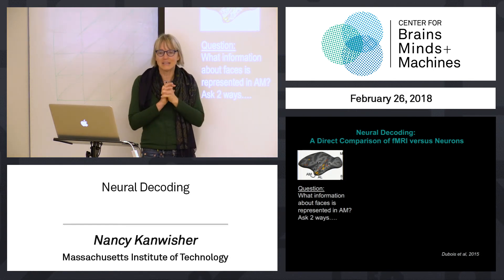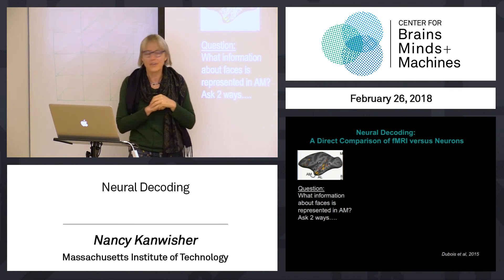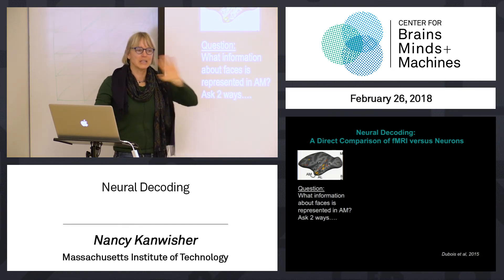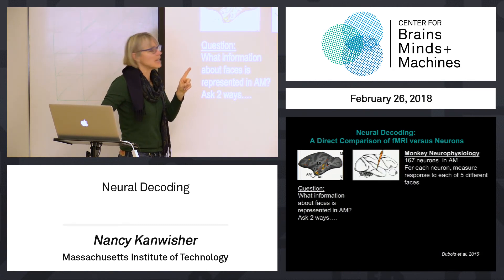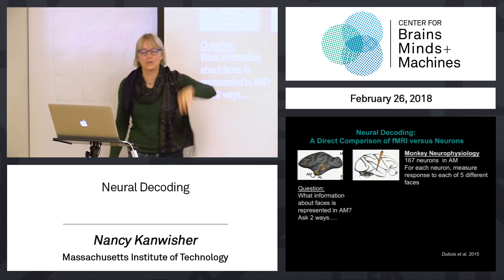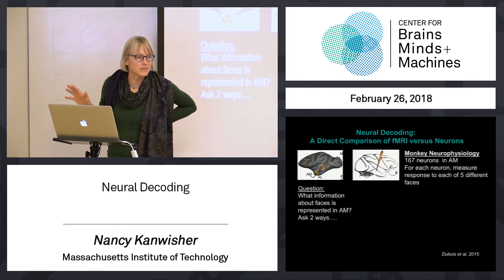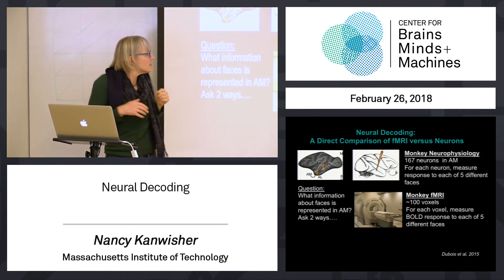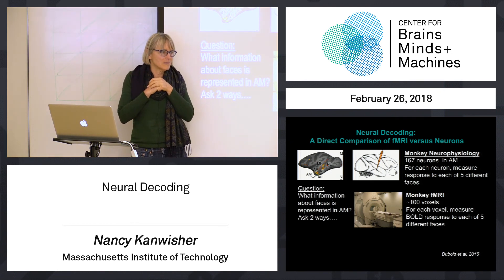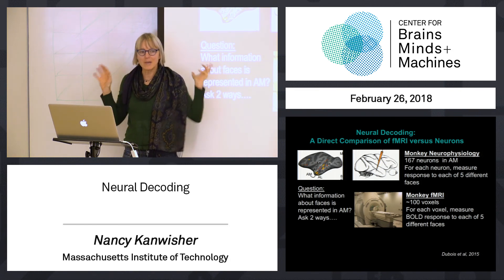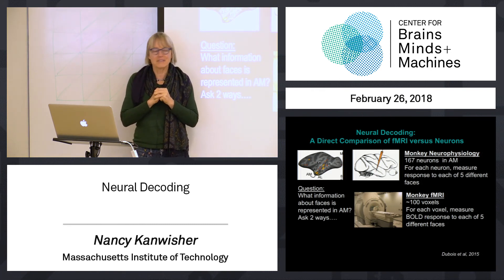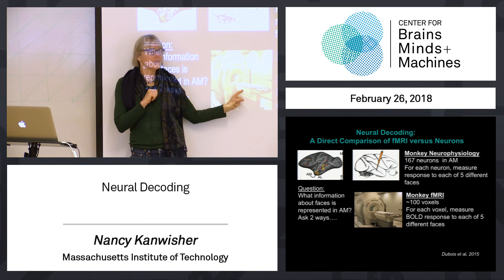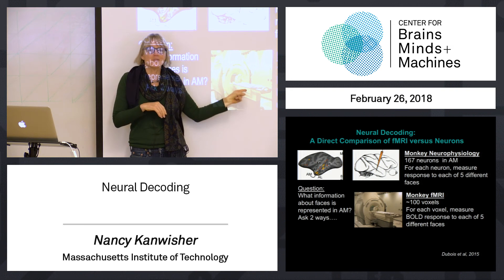Dubois et al. published a paper recently where they did that comparison in monkeys. Remember, there are six face-selective patches in monkeys — they looked at one of those face-selective patches and asked what information about faces is represented in that region, by showing lots of different pictures of faces to the monkeys. They measured two kinds of data: in one, they stuck electrodes in that region and recorded responses from 167 neurons to each of five different faces. In the other case, they took the same monkeys, put them in the scanner, and measured the MRI response from about 100 different voxels in the same region to the same five faces. In both cases, they applied pattern decoding methods to ask what kind of face information is present in that region, either as measured with single units or with functional MRI. What they found was: with single units, they could decode the identity of the face presented — and with functional MRI, they could not.